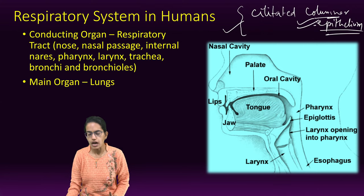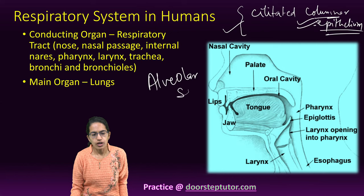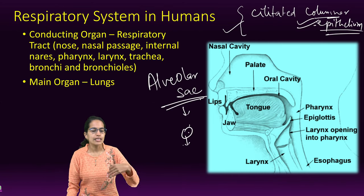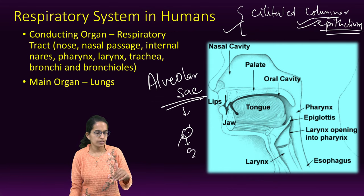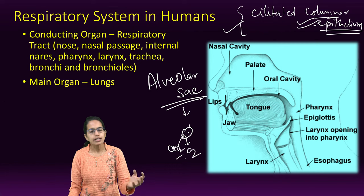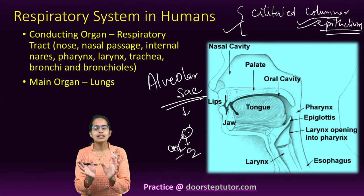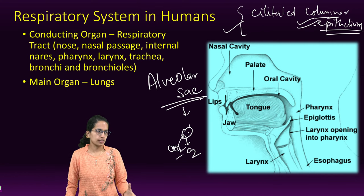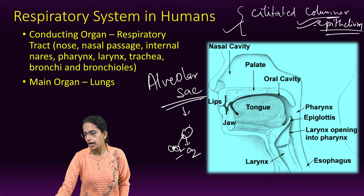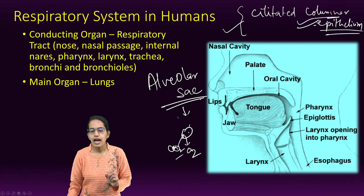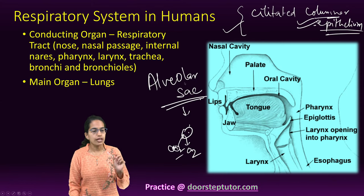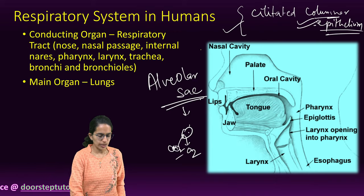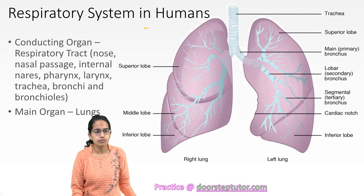The alveolar sac contains the alveoli, which are the final ends and the main respiratory organs. They exchange oxygen and carbon dioxide — oxygen is supplied to the blood and carbon dioxide is taken from the blood. They look like a bunch of grapes. Alveoli are called the major functional unit of the lungs — a very important exam question. The epithelium of the alveoli is squamous epithelium.